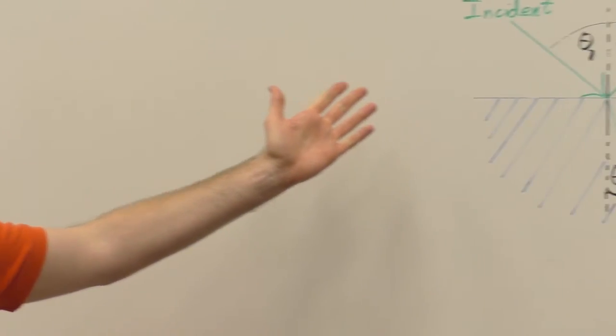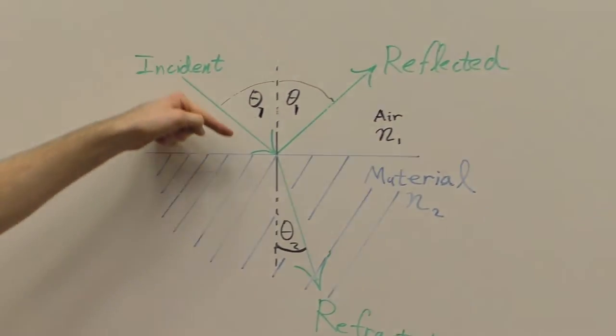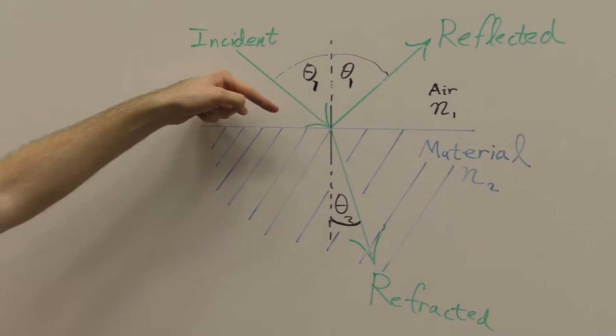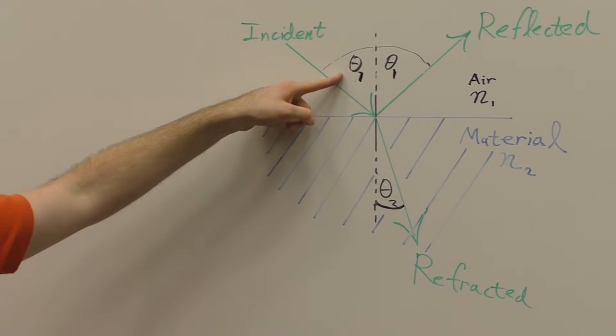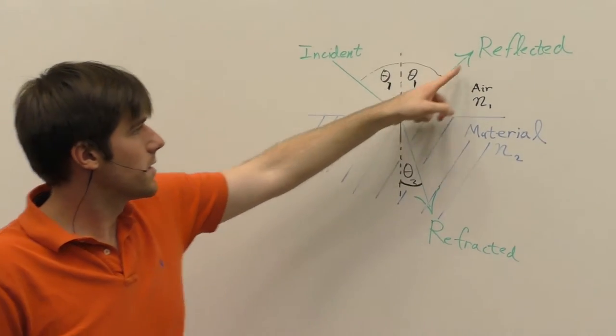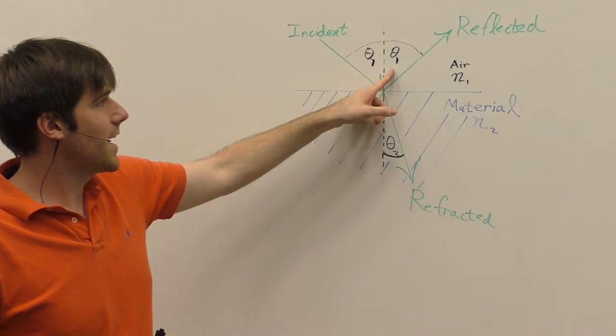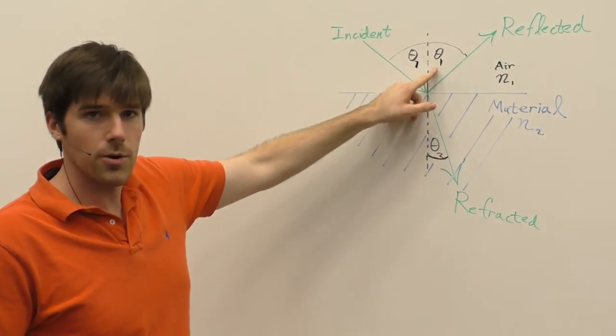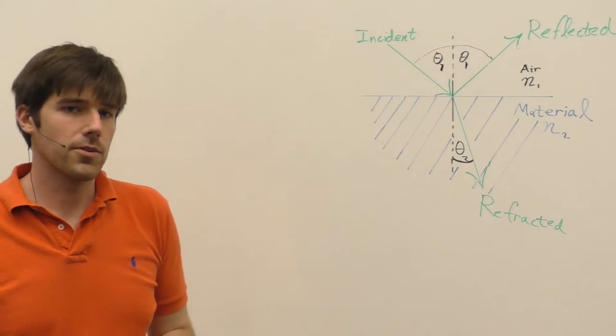So in this schematic diagram here, we have an incoming light beam, which we refer to as the incident beam, and it comes in at some theta 1. As I said previously, part of the beam is reflected, and it's reflected at the same angle in which it came from. And these angles are with respect to the vertical of the surface.